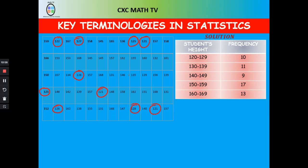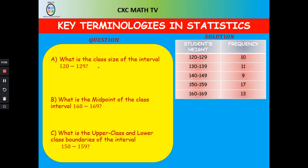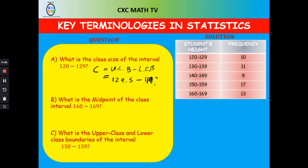Now the question asks: what is the class size of the interval 120 to 129? Class size equals the upper class boundary minus the lower class boundary. The upper class boundary is 129 + 0.5 = 129.5, and the lower class boundary is 120 − 0.5 = 119.5. So the class size is 129.5 − 119.5 = 10.